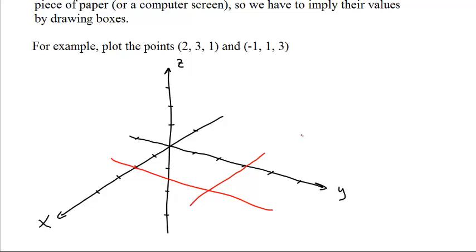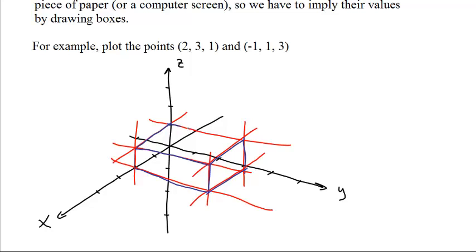So we want our y-value to be somewhere there, but we also want to be 1 point up. So we want something like this. We draw over like this. We draw over like this. And we've made a box. We have made a box that is 2 wide parallel to the x-direction, 3 wide parallel to the y-direction, and 1 up and down. So this point right here at the very tip is the point (2, 3, 1).